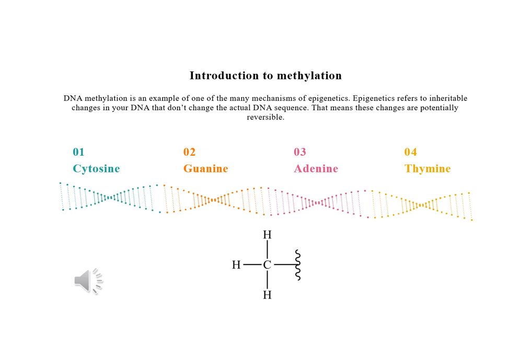DNA methylation often inhibits the expression of certain genes. For example, the methylation process might stop a tumor-causing gene from turning on, preventing cancer.